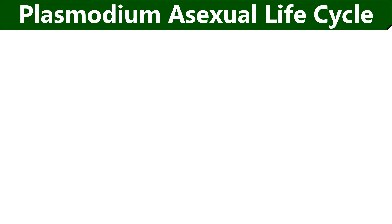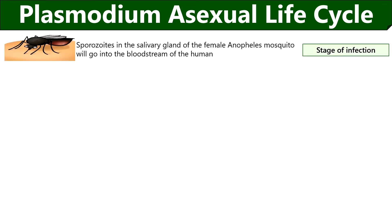Let us discuss the asexual life cycle of Plasmodium. The first step is the stage of infection. Only the infected female mosquitoes of the genus Anopheles transmit the malaria parasite into the body of humans and other vertebrates during a blood meal. The adult female Anopheles mosquitoes need the protein in the blood to develop their eggs. So the infected female mosquitoes carry the sporozoites or spores of Plasmodium in their salivary gland, and as a result, the sporozoites enter the bloodstream of the human through the mosquito bite.